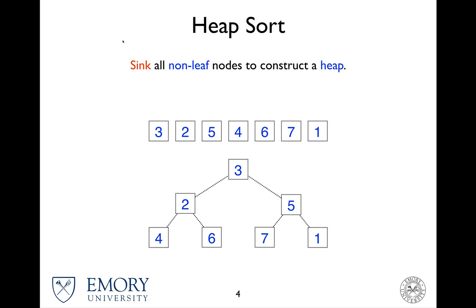So we visit every non-leaf node. Let's visit 2 and compare it against its two children, 4 and 6, and find the maximum and do the swap. So we do swap with 6. Make sure you do the swap on the list too.